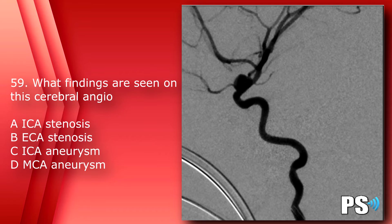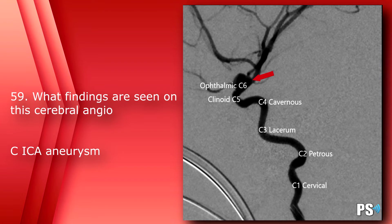Number 59: What findings are seen on this cerebral angio? A) internal carotid artery stenosis, B) external carotid artery stenosis, C) internal carotid artery aneurysm, or D) middle cerebral artery aneurysm. The answer is C, internal carotid artery aneurysm at the ophthalmic level.